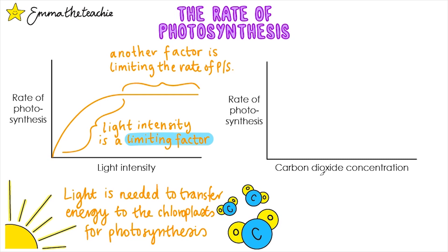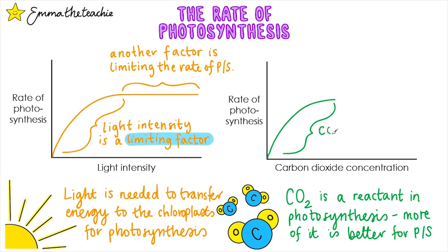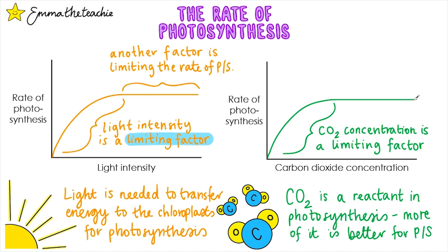For example, carbon dioxide concentration. The rate of photosynthesis will also increase, and this can be shown on the graph. At low concentrations of carbon dioxide, CO2 is limiting, so we say the CO2 concentration is a limiting factor at these concentrations. Beyond a certain concentration, carbon dioxide stops being the limiting factor and instead it's a different factor that limits the rate of photosynthesis.